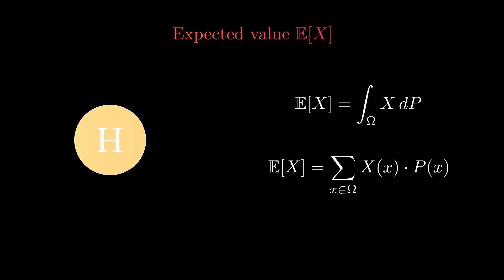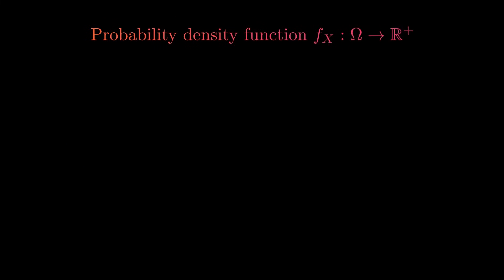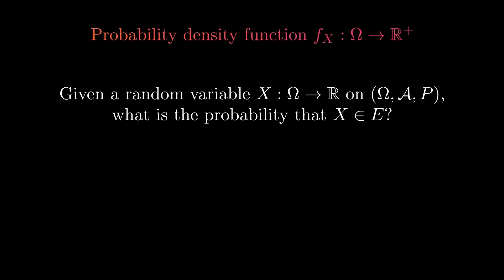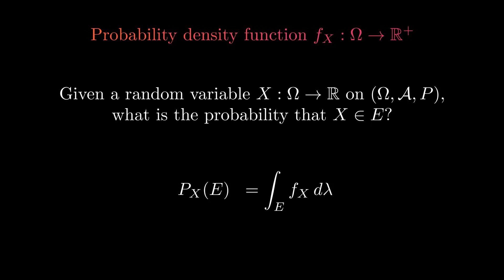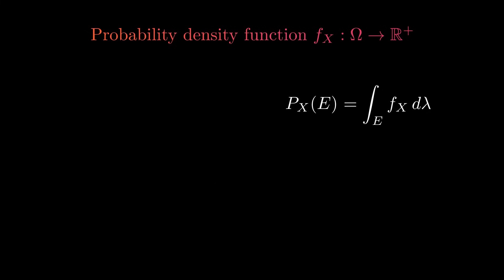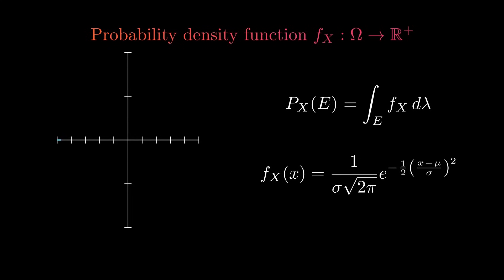Let's now look at how we can describe a probability with a probability density function. When we have a random variable on the probability space, how can we measure the probability that the value of the random variable is within a certain measurable set E? We call this probability P_X, and it is the probability of the preimage of E under X. To describe this probability within the Lebesgue measure space, we introduce the probability density function. Then the probability P_X of E is equal to the integral of the probability density function over the set E. For example, the normal distribution is such a probability density function.